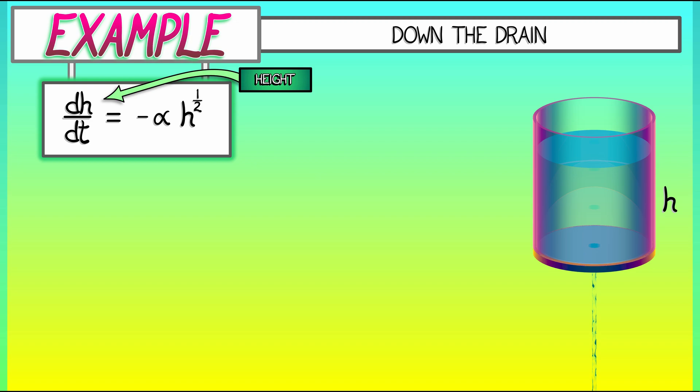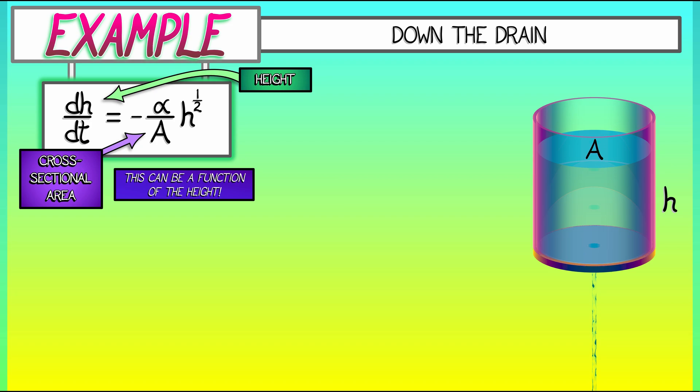Is that it? No, that's not it. We got to keep going because you need to take that quantity and divide it by A, the cross-sectional area of the tank, incorporating the geometry into the equation. This is where it gets really interesting because that cross-sectional area itself may depend on the height. It may change as h is decreasing, so capital A, function of h. What do we do with this?